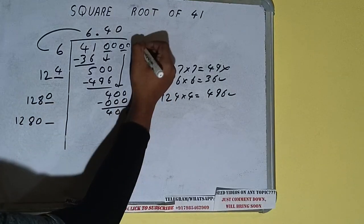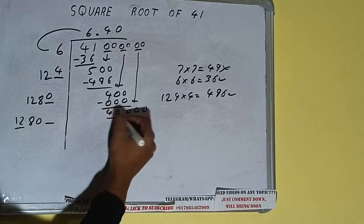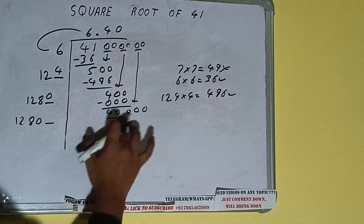This number we need to make big, so bring the next pair of zeros down and it will be 40,000. Now compare this 12 with this 40. So 12 times 3 is 36, so we can try 3 times.